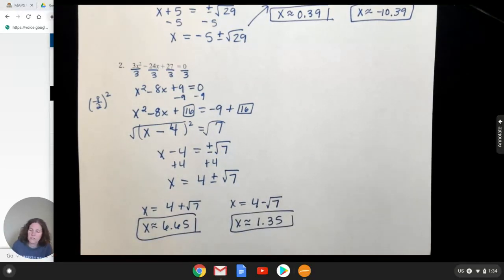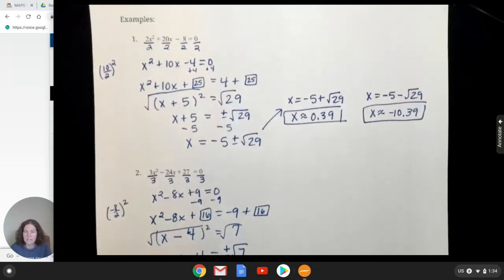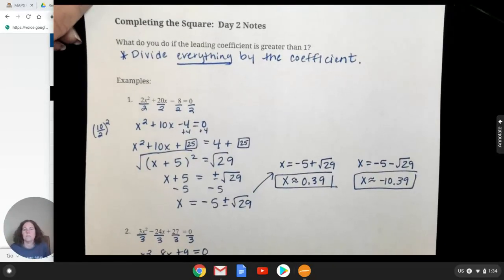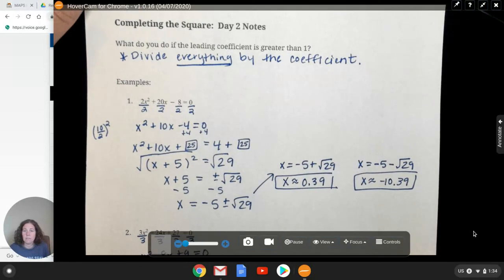And hopefully that's what you got for your answers. Remember to be careful with the rounding. You do want to round accurately, especially for your homework, so that you are not getting it wrong just because of the rounding errors. All right. So this was completing the square day two. And it is basically the same except for what to do if you have a coefficient. All right. Have a good day, everybody.